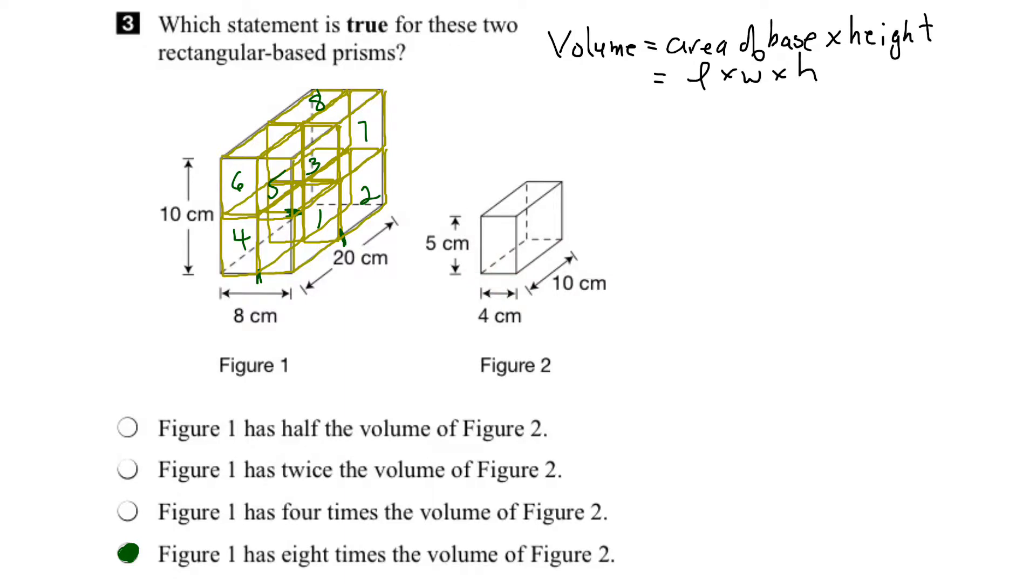So let's start by looking at the volume of the larger rectangular-based prism. So our volume of figure one would be its length times its width times its height. And its length is 20 centimeters, its width is 8 centimeters, and its height is 10 centimeters. So we put those in here: 20 times 8 times 10.